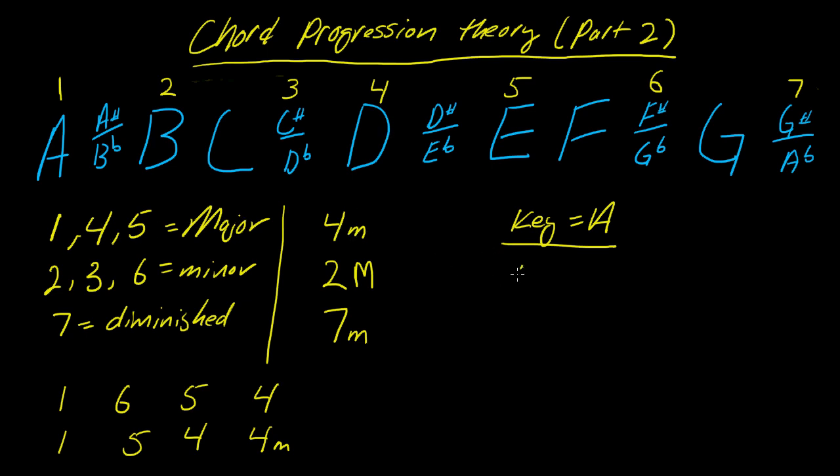So four minor is D minor. This is only in the key of A. Two major in the key of A would be this two, B, which by default is a minor chord. It would now be a B major, just like that.